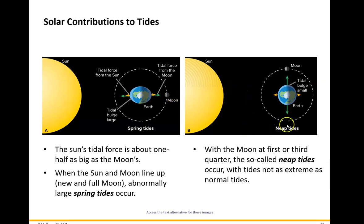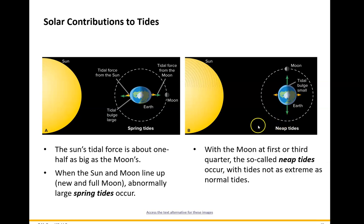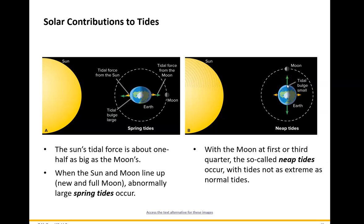Then you have what are called neap tides. For a neap tide, the angle between the sun, the Earth, and the moon is at 90 degrees — so this is either the last quarter or the first quarter. Last quarter is also known as third quarter. During that time, that's a neap tide, and the sun is canceling out some of the tidal effect from the moon.